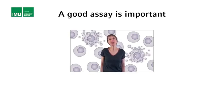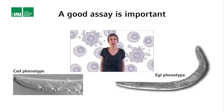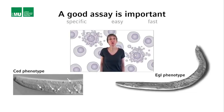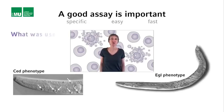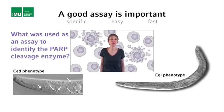Remember, Sulston and Horvitz used the CED-1 mutant background and then the EGL-1 mutant background as an assay for their genetic screens. To be good, an assay needs to be specific, easy and fast, so that in the case of a biochemical approach, you can go through lots of different samples very quickly. What did the team around Donald Nicholson and Douglas Miller decide to use as an assay to identify the PARP cleavage enzyme? Of course, they used PARP cleavage.